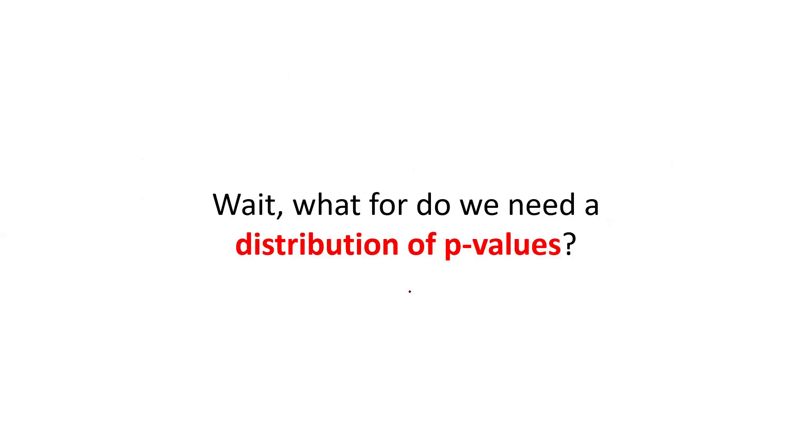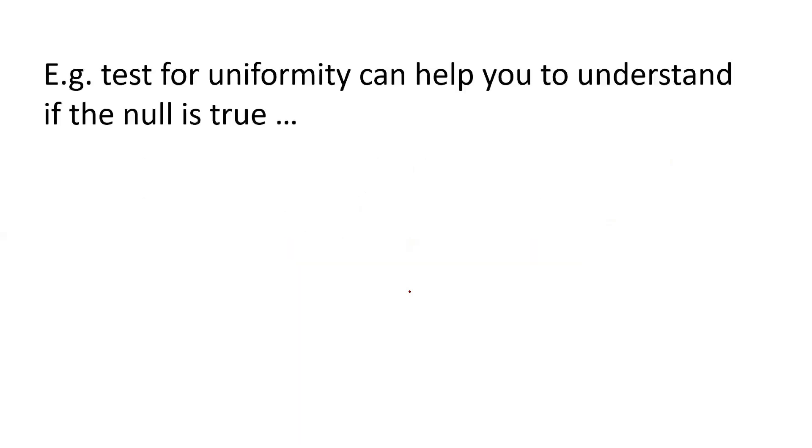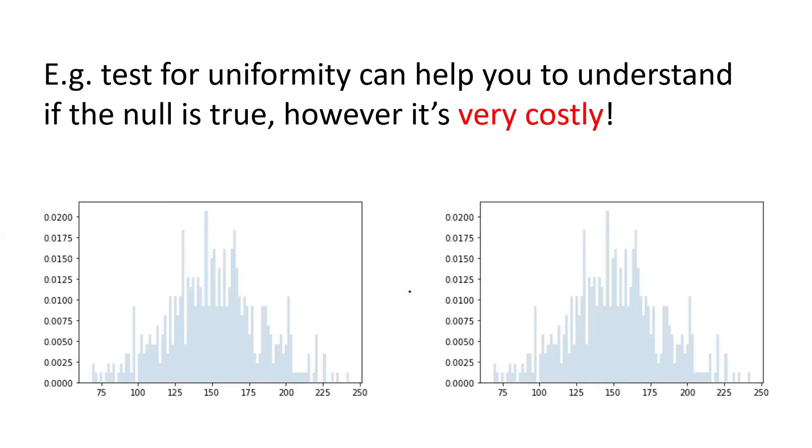You can say, what for do we need a distribution of p-values? It's really fine to know that it is uniform, but what for do we need it? Well, I can tell you, for example, that test for uniformity can help you to understand if the null is true or not. But trust me, this is very costly. So yes, you would compare the distribution of your p-values to the uniform one. And for example, you would understand that no, it's not uniform, meaning that the null is not true, then there is an alternative hypothesis that is true.